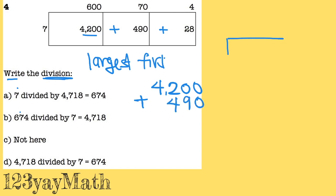Make sure that you do organized numbers and correct place value. So 8, 9 plus 2 is 11, then 4, 5, 6, 7, and 4. So I have 4,718.